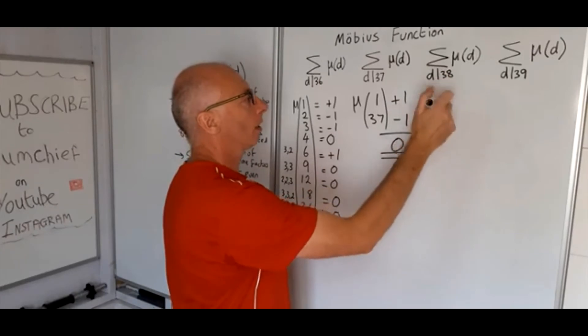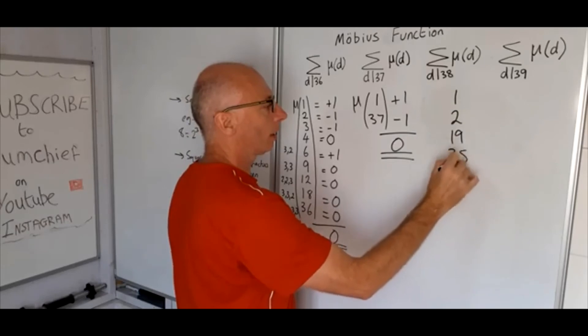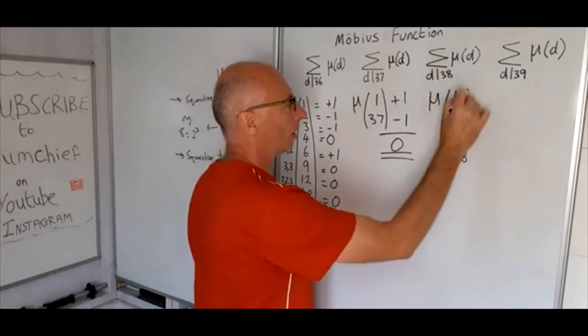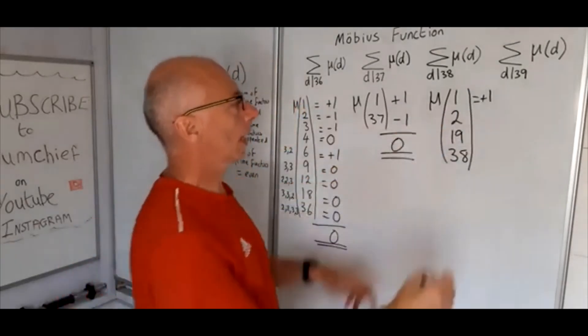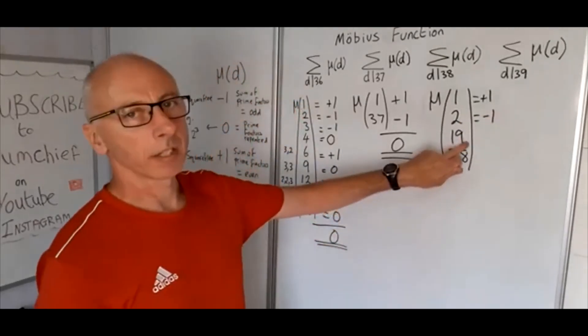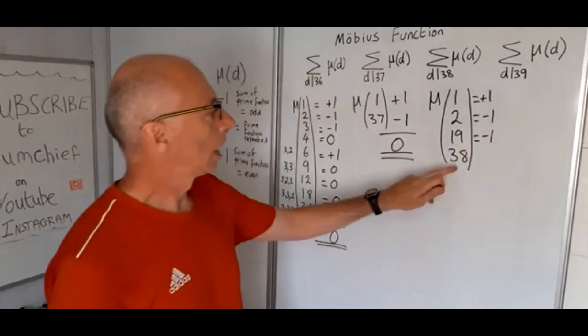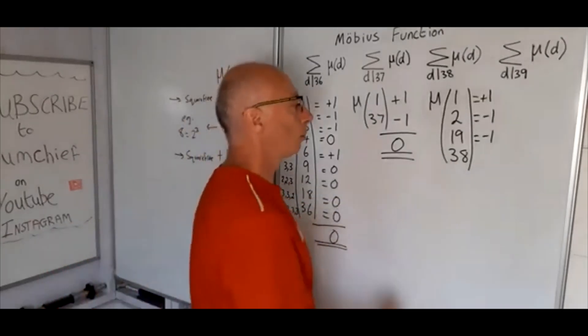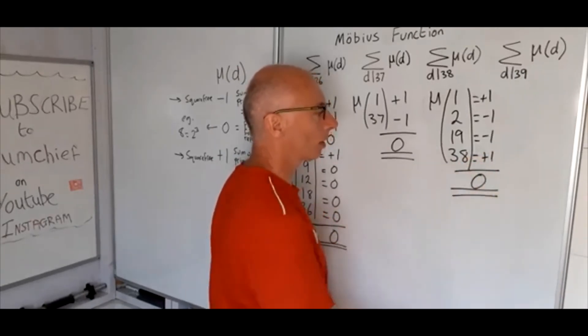Okay, so 38. The divisors of 38 are 1, 2, 19, and 38. So let's take the Möbius function of all these divisors here. The Möbius function of 1 gives us plus 1. 2, again it's just got 2 as a prime factor, so that becomes minus 1. 19, again as a prime number, all prime numbers give us the value minus 1. And 38 has prime factors of 2 and 19, so that's an even number, so now that gives us plus 1. So sum them all up and surprise surprise we get 0.